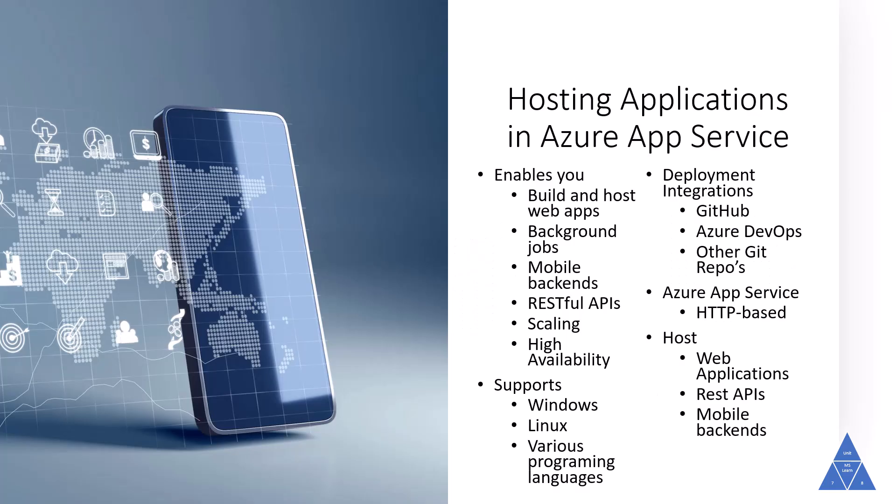Azure App Service enables you to build and host web applications, background jobs, mobile backends, and RESTful APIs in the programming language of your choice without managing infrastructure. It offers automatic scaling and high availability. App Service supports Windows and Linux, and enables automated deployments from GitHub, Azure DevOps, or any Git repo to support a continuous deployment model.